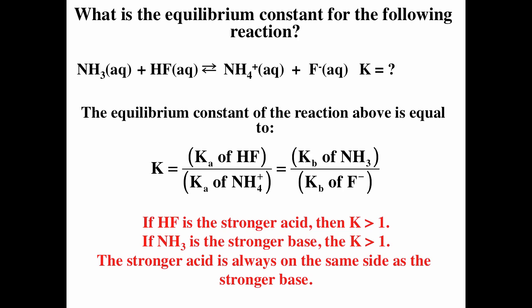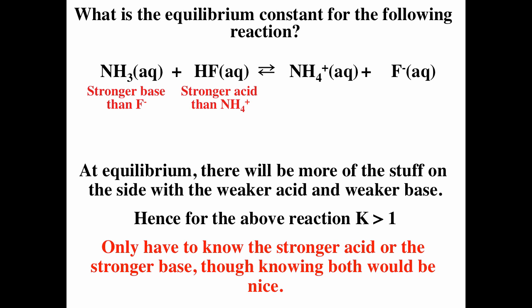If HF is a stronger acid than the ammonium ion, then K will be greater than 1. If ammonia is the stronger base than F⁻, then K will be greater than 1. The stronger acid is always on the same side as the stronger base. So if you can identify the strongest acid or strongest base, you can determine whether the equilibrium constant is greater than or less than 1. For this reaction it is product-favored, so K is greater than 1.